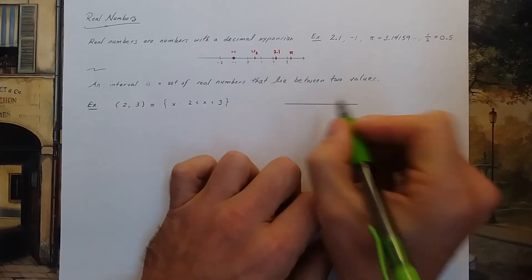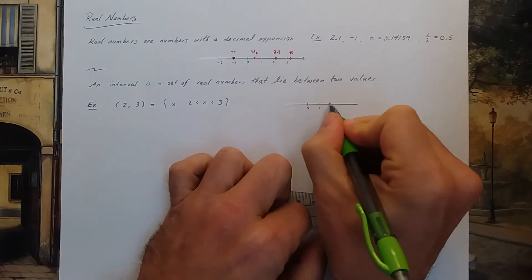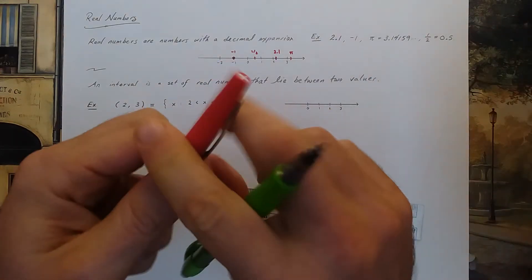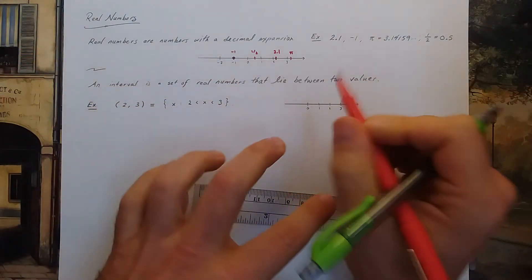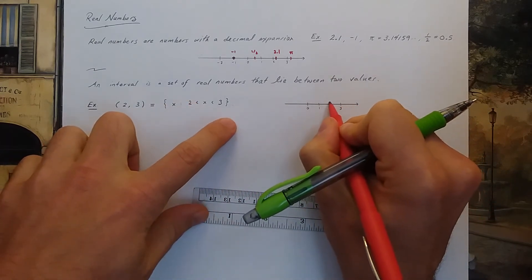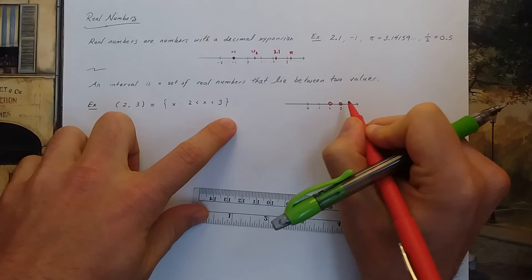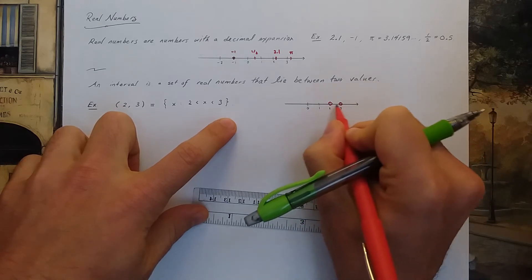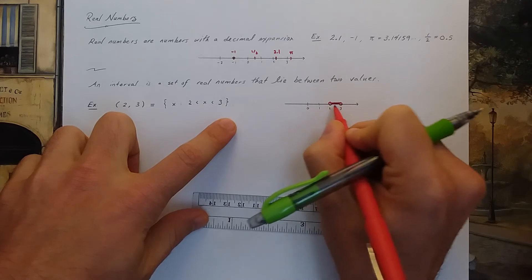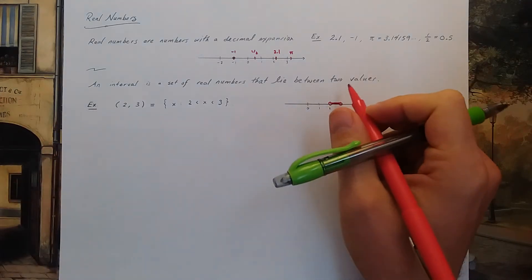If I have a number line, 0, 1, 2, 3, this interval is all numbers in between 2 and 3, but not including 2 and 3. We put an open circle at the 2 and open circle at the 3 to indicate that 2 and 3 are not included in the interval. I'm going to shade in this interval to indicate the interval from 2 to 3.